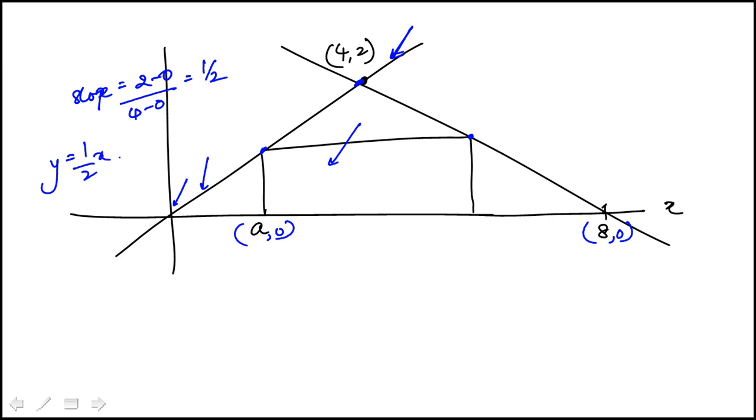And that means that this point here, which has the x-coordinate of A, the y-value would be A over 2. So we know that this is A over 2.